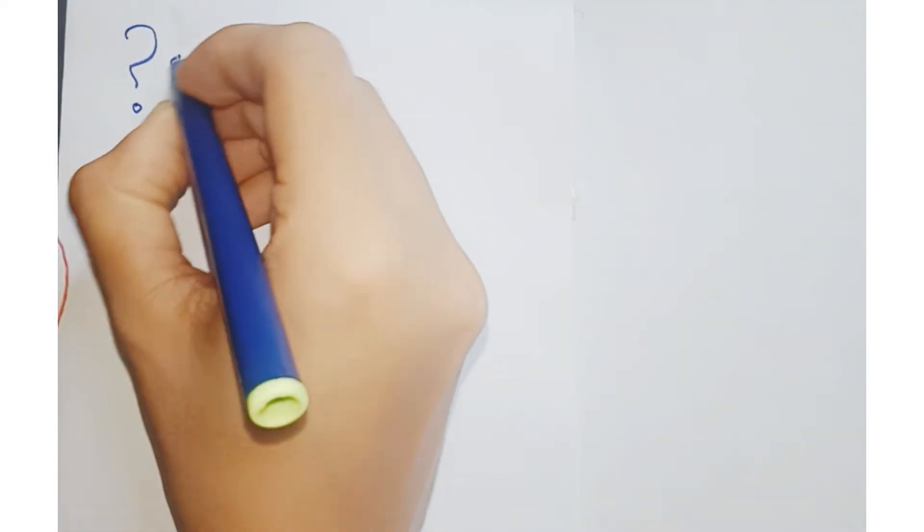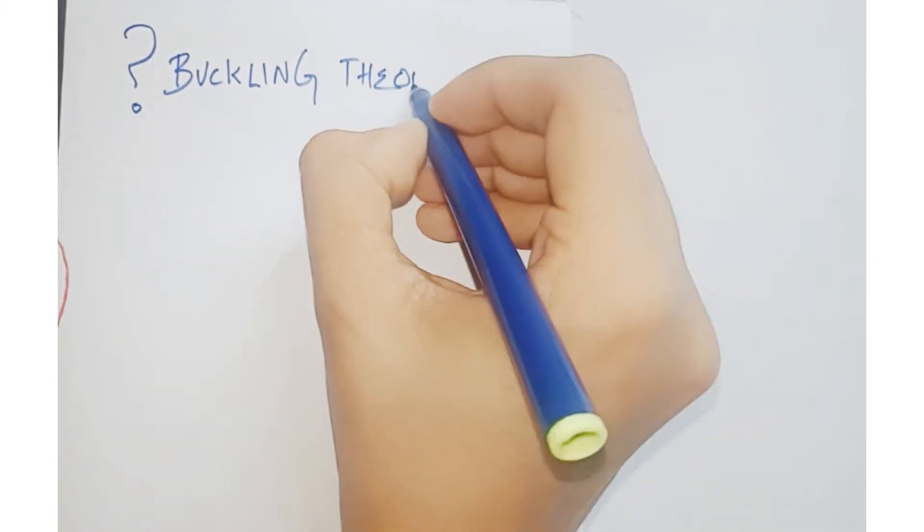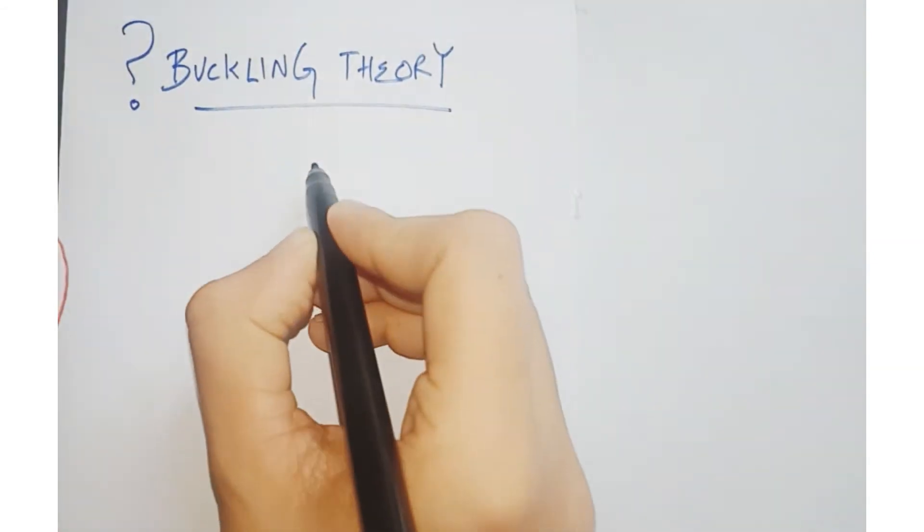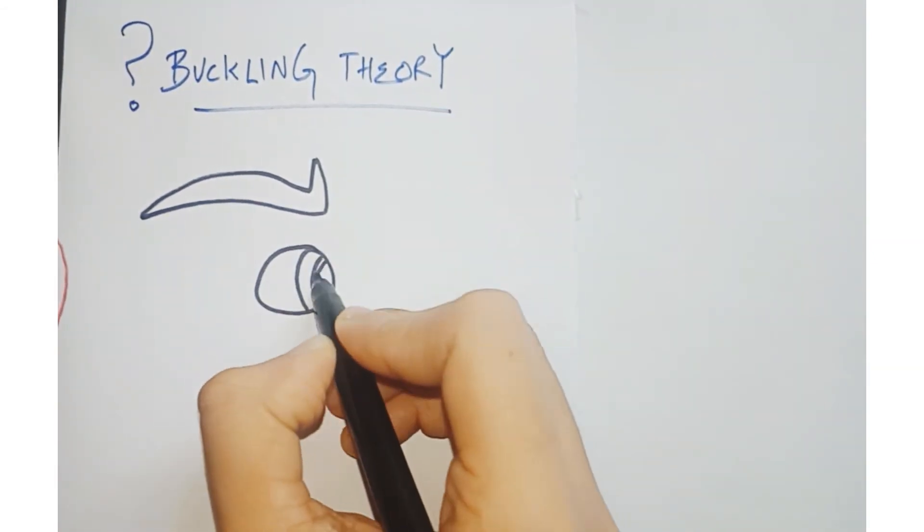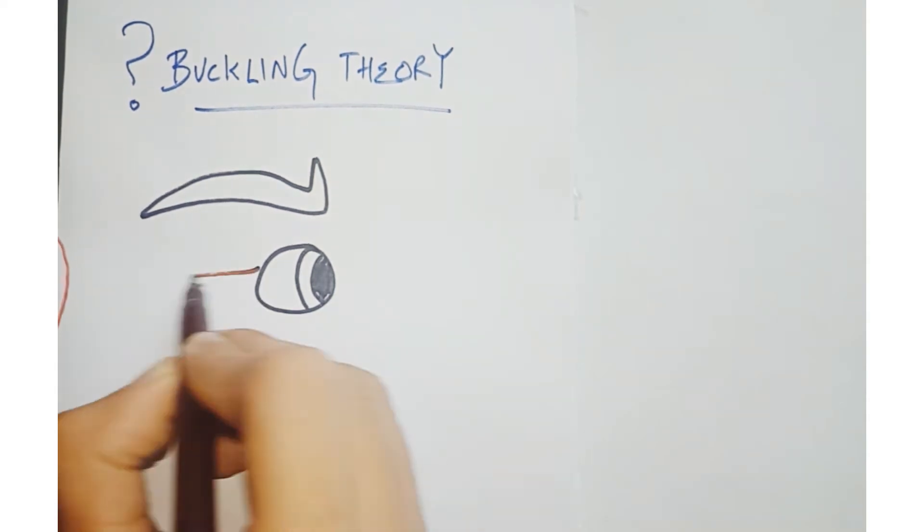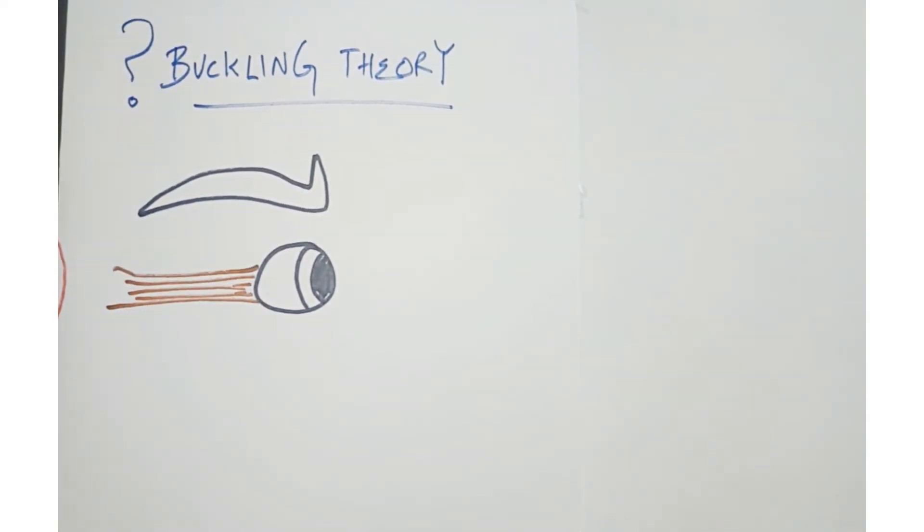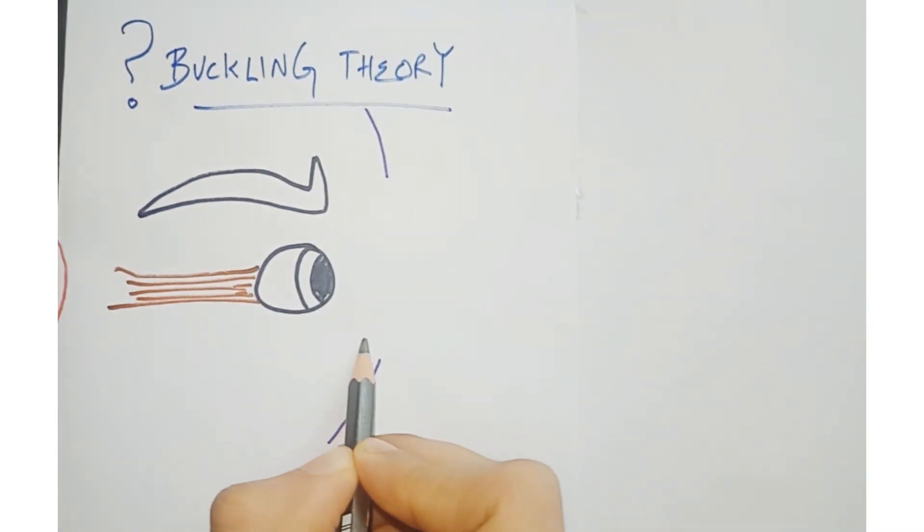Now let's see what buckling theory is. Draw the same picture as we did previously - the only change is the direction of the object striking. This happens as a result of direct trauma to the orbital rim. This is your orbital rim and below that, maxillary sinus.